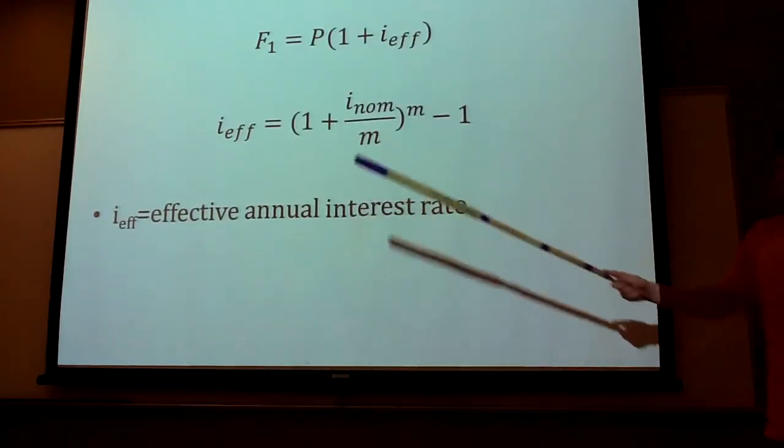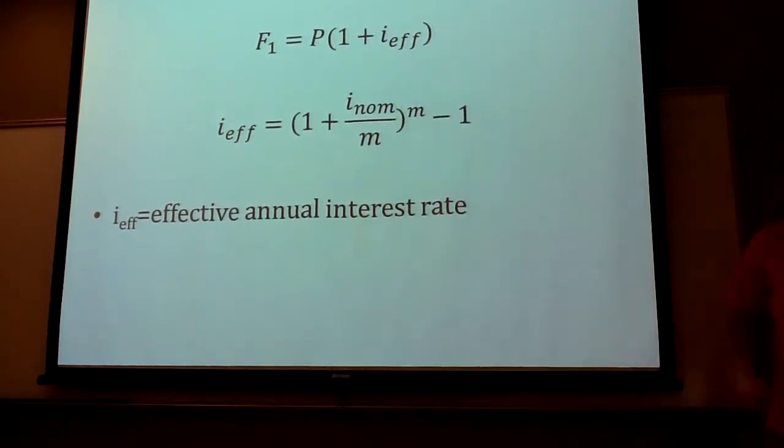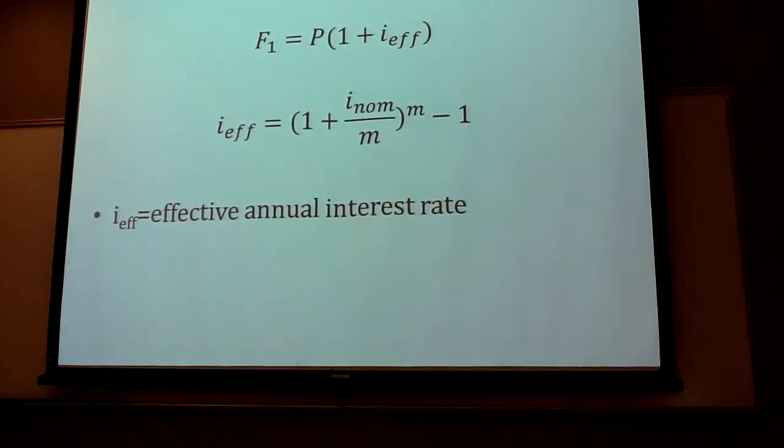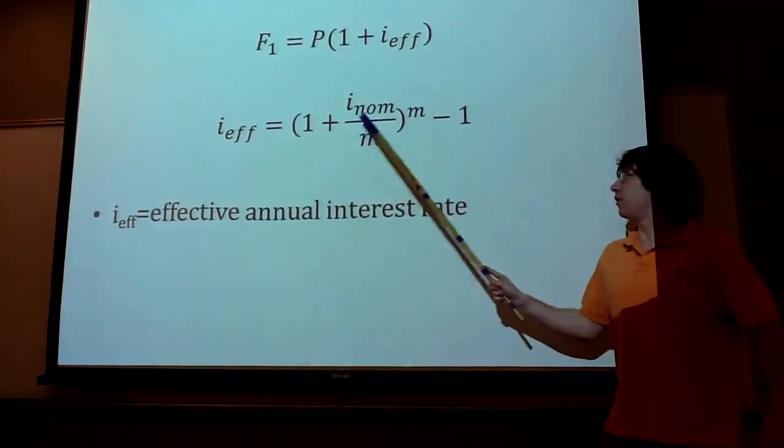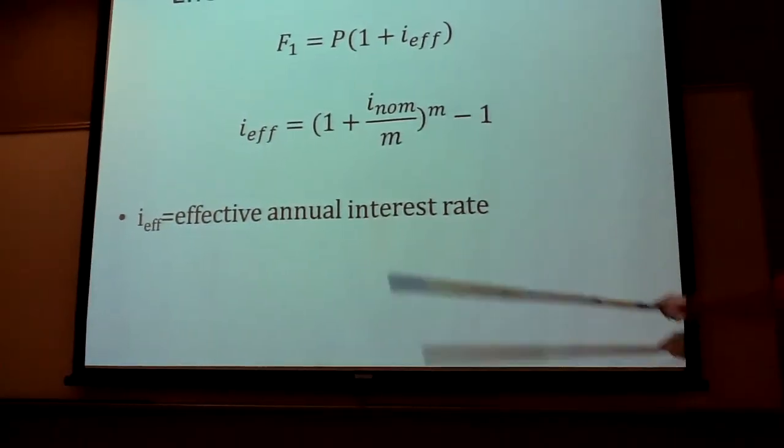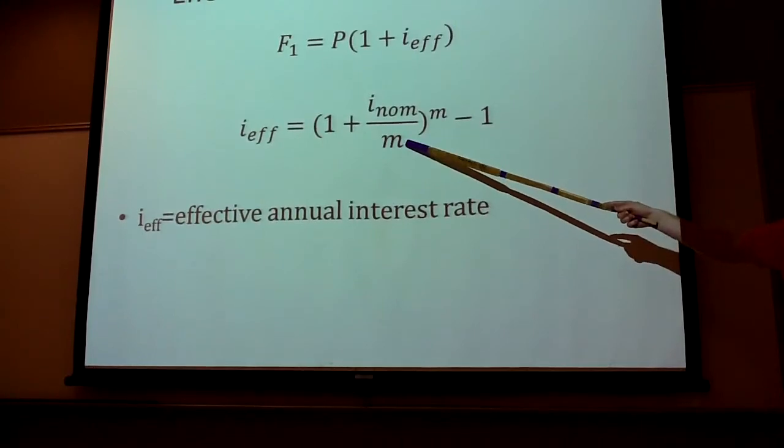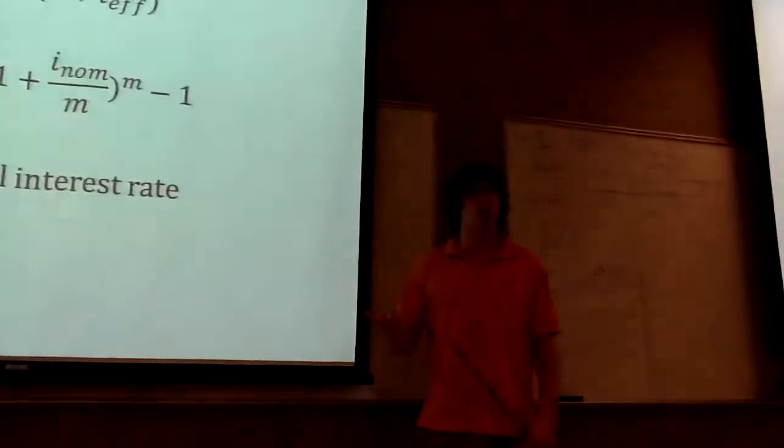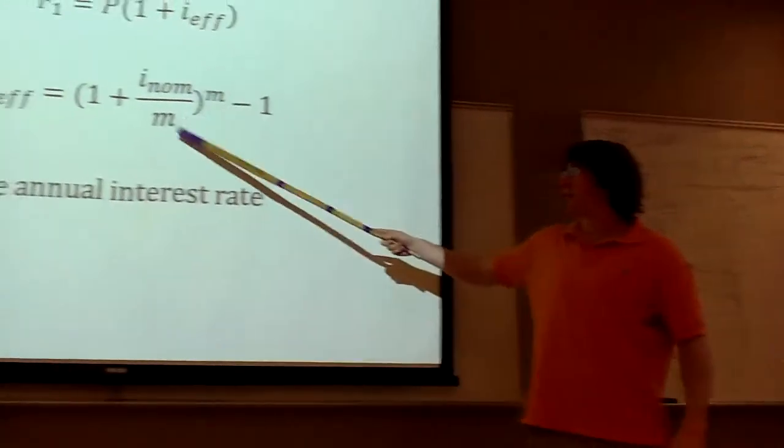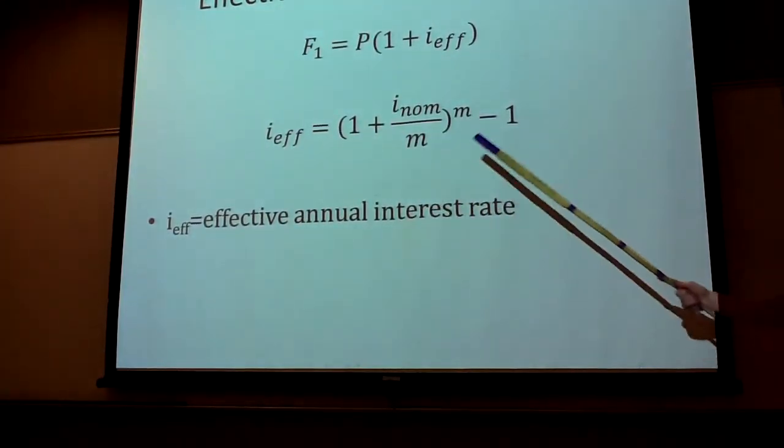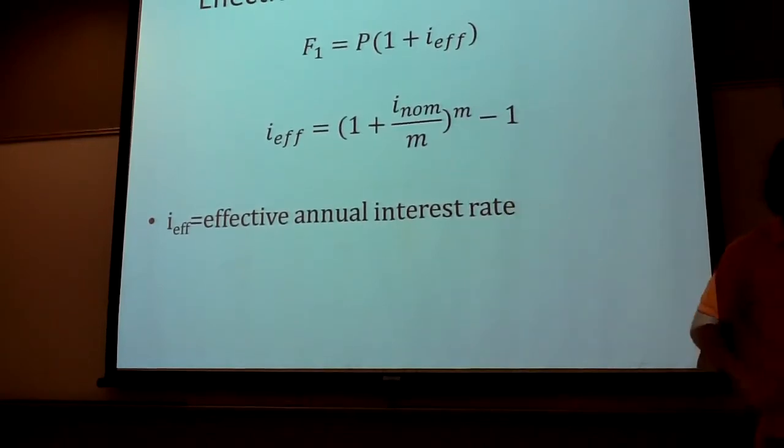The easiest way to see this is one plus your effective interest rate times the price will give you the future value of your money. To go between nominal and effective interest rates, it's just based off how often it accrues. You divide it by the number of times that it accrues, whether it compounds quarterly, yearly, or monthly. You divide by the number of times, plus one, take it to the power, then minus that one, and that'll give you your effective interest rate.